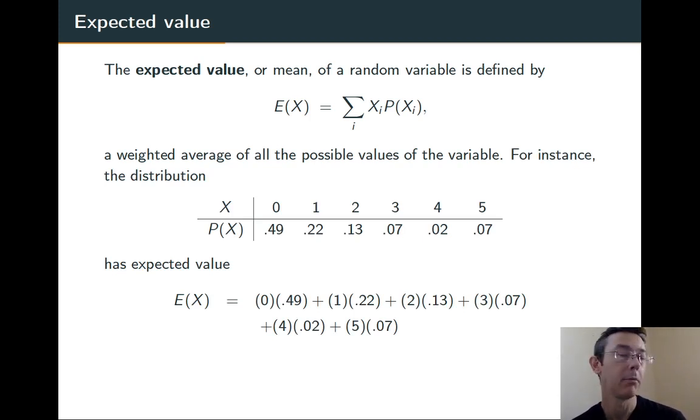Back to that discrete probability distribution from the previous slide. I take the value 0, multiply it by the probability 0.49, plus the value 1 times the probability 0.22, plus on down the line. Take each of the values, multiply them by their probabilities, add them all up. Here we get 1.12.